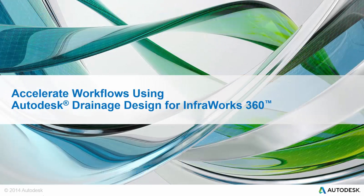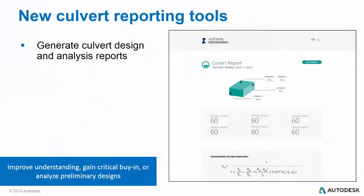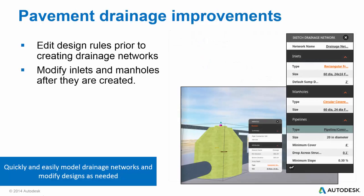The last bundle of feature and functionality updates in this release improved the drainage design for the InfoWorks 360 vertical application. The first and notably big step forward is the ability to generate culvert design and analysis reports. This deliverable can be distributed to stakeholders to improve understanding, gain critical buy-in, or be used to analyze preliminary designs to make important decisions earlier in the design process. Next are key improvements to pavement drainage — you are now able to edit design rules prior to creating drainage networks and have the ability to modify inlets and manholes after they are created.